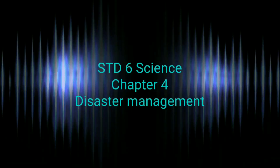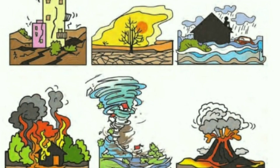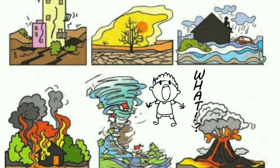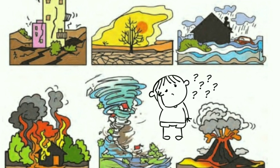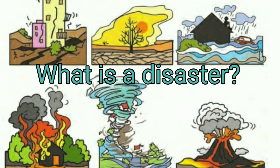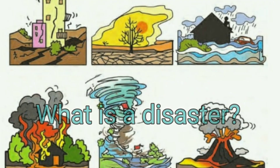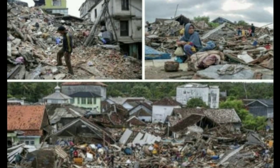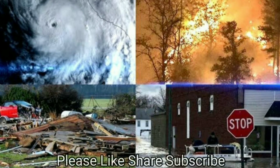General Science Standard 6, Chapter 4: Disaster Management. Can you tell what events you see in these pictures? What would you have done in these situations? Have you experienced such a situation yourself? Why do these events occur? A sudden event that causes large-scale damage to life, property, and social aspects of a nation or society is called a disaster.